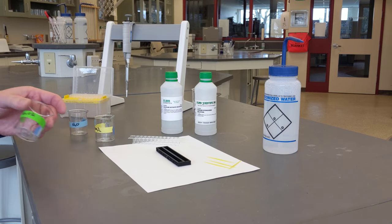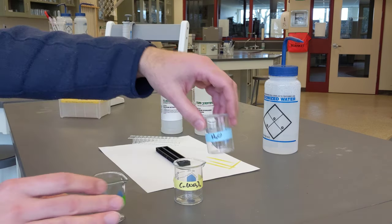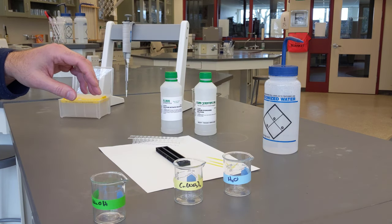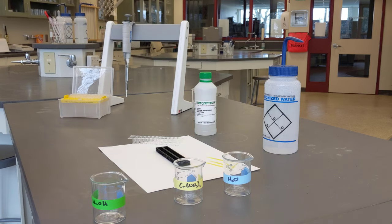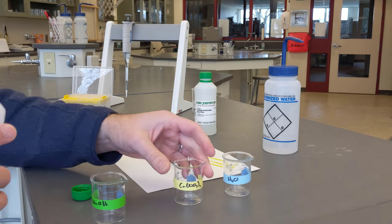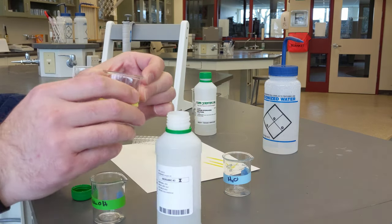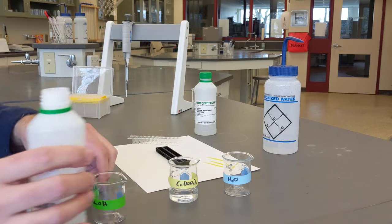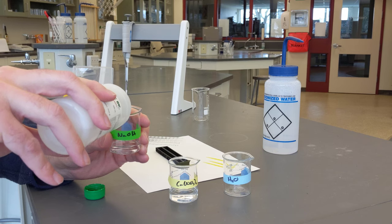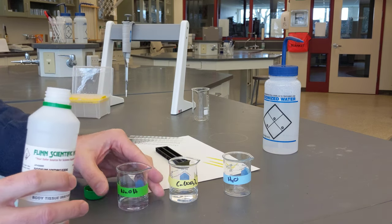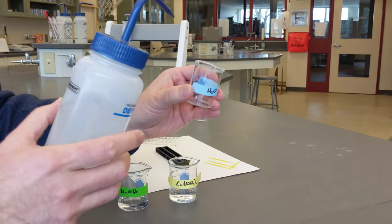Step on, I've labeled the beakers with the correct solution and water. So now I have to put 10 milliliters of the calcium nitrate approximately into the calcium nitrate beaker, 10 milliliters of sodium hydroxide, and 10 milliliters, excuse me, 20 milliliters of water.